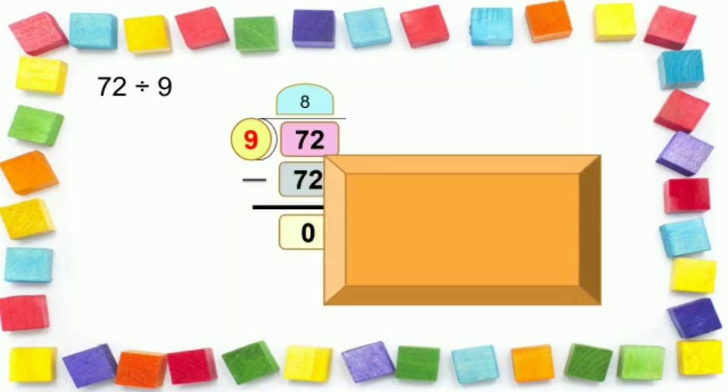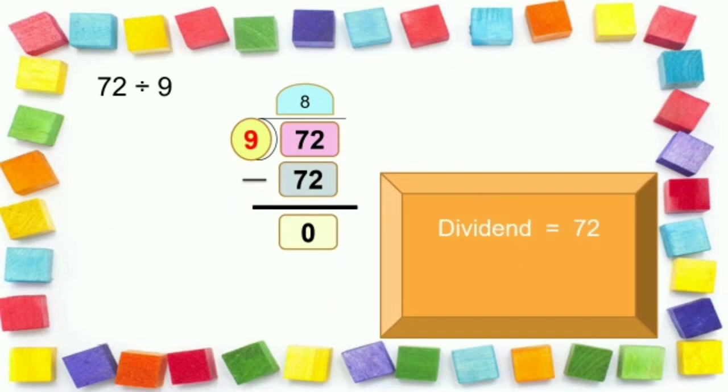We can summarize it as: dividend here is 72, divisor is equal to 9, and the quotient is equal to 8.